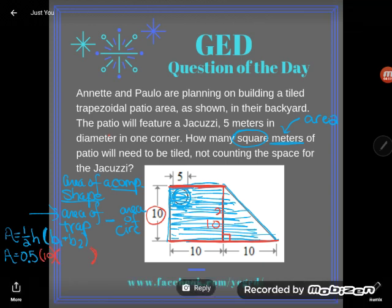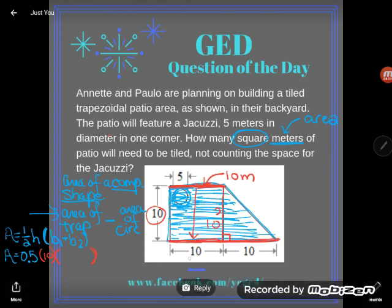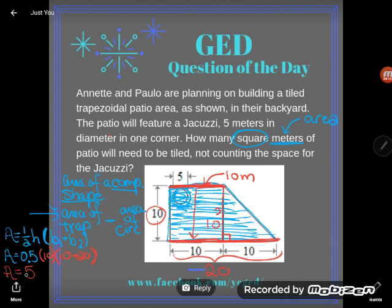I need to multiply that by the sum of my two bases. One base is 10 meters — looking at the opposite side of the rectangle inside the trapezoid — and the other base is 10 plus 10, so 20 meters. So: A = 0.5 × 10 × (10 + 20). Half of 10 is 5, 10 plus 20 is 30, and 5 times 30 is 150 square meters. But careful — that is the total area; I still need to cut out the circle.